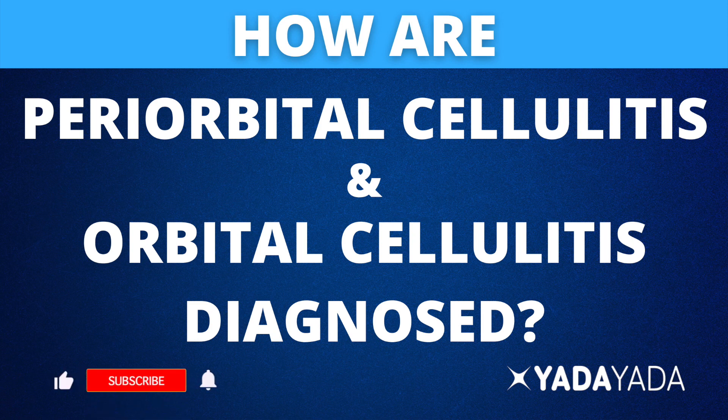How are periorbital and orbital cellulitis diagnosed? The most common presentation is a child who's had an upper respiratory illness, has some sinus pressure, started to get color change to their mucus, started to get face pain, then the eyelids start to swell and there's pain with moving their eye around.